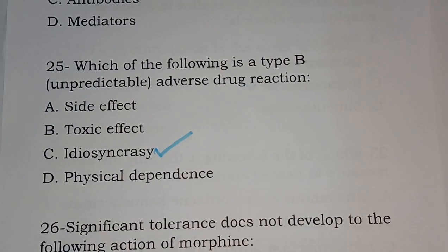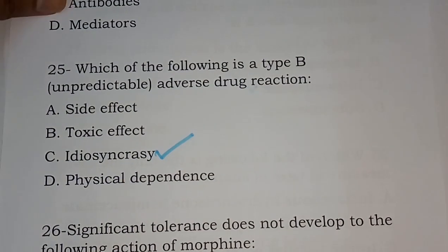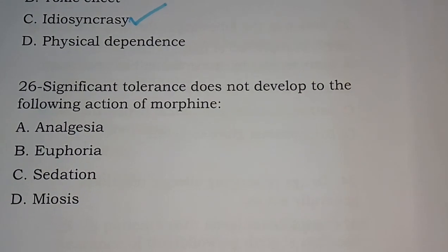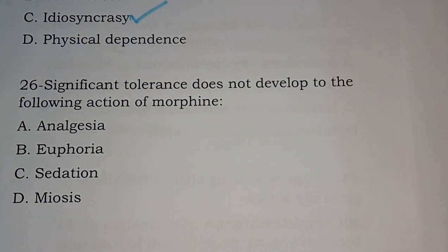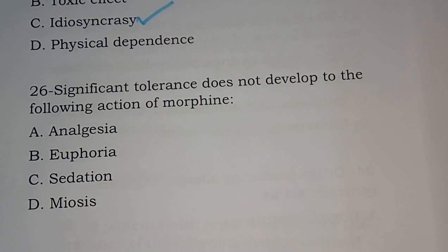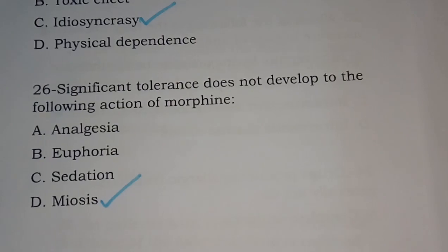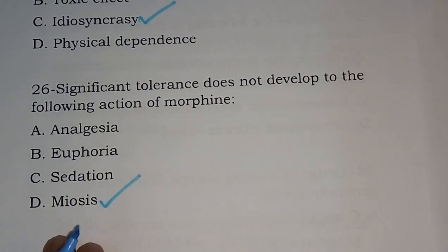Question 26: Significant tolerance does not develop to the following action of morphine. Options are analgesia, euphoria, sedation, meiosis. Option D is the correct answer, meiosis. Tolerance does not develop to meiosis.